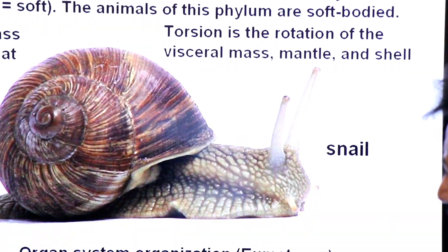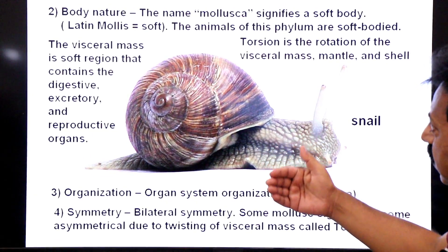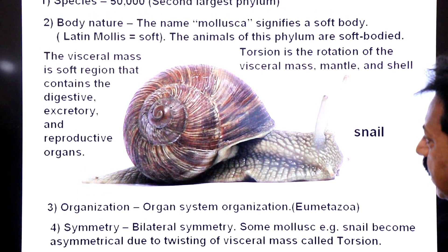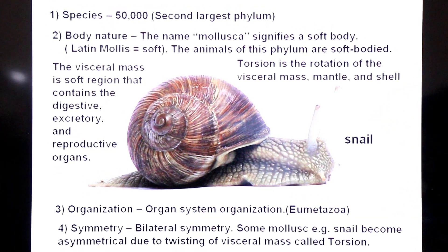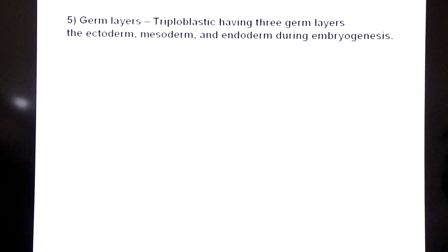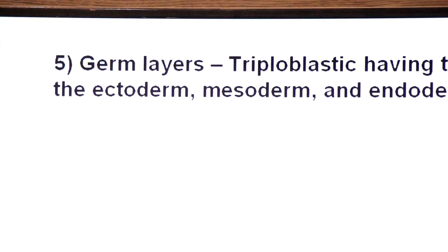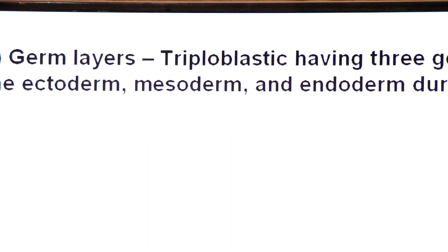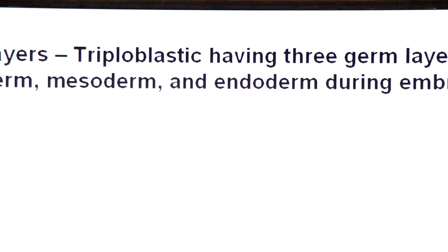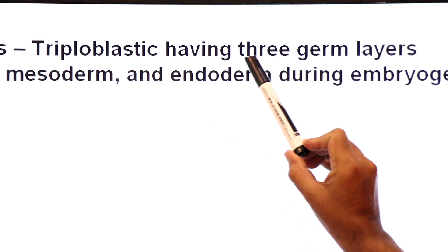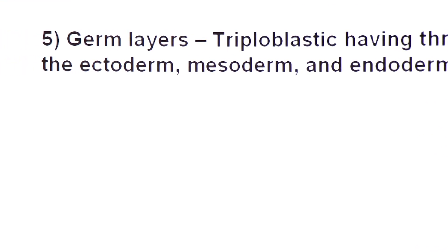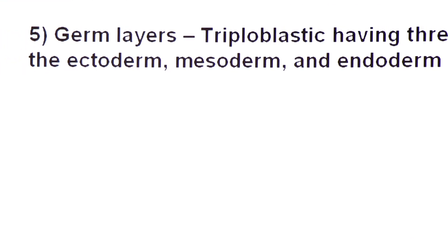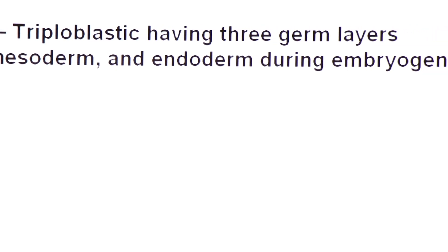This means gastropods, which are members of phylum Mollusca, are asymmetrical. Now, germ layers — dear students, they are triploblastic animals, having three germ layers: the ectoderm, mesoderm and endoderm, during embryogenesis.